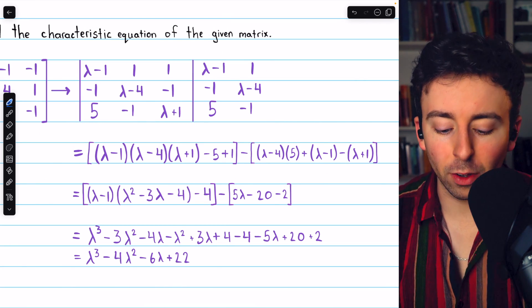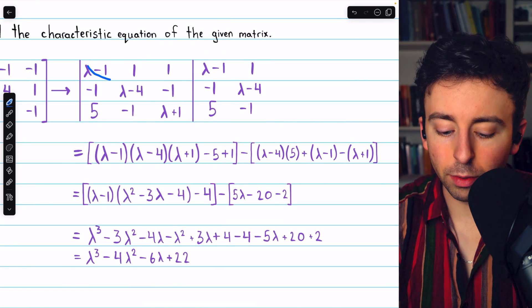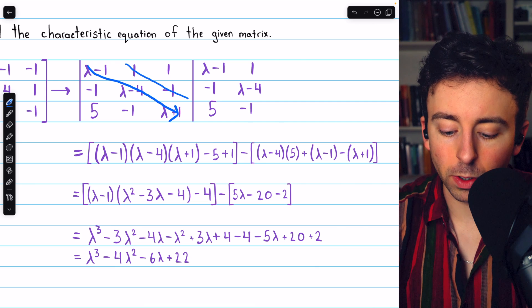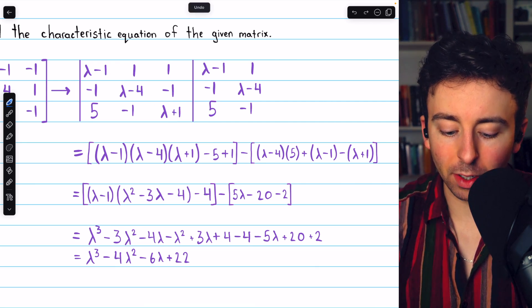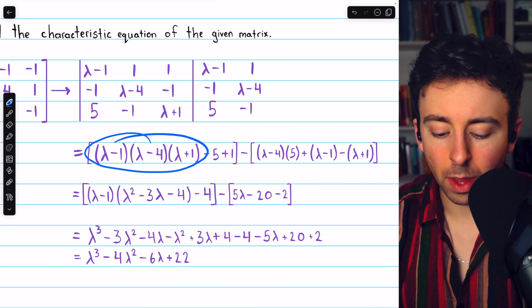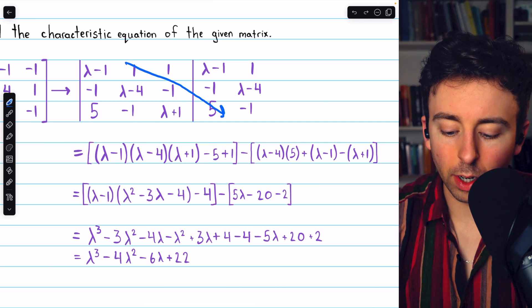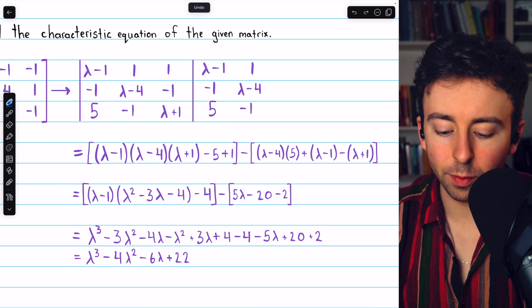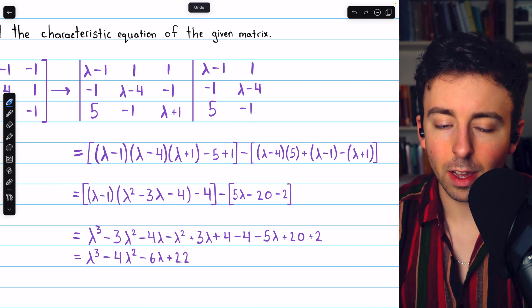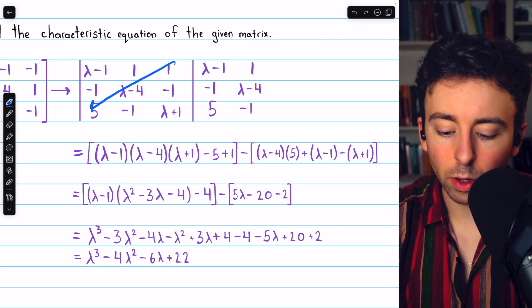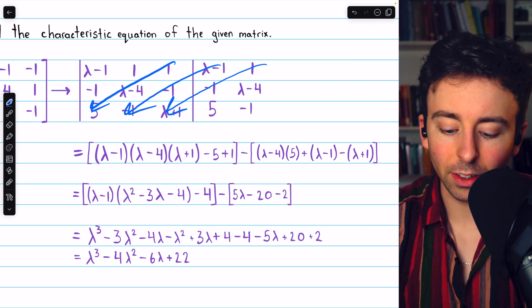From here, it's just a whole bunch of algebra. The first thing we do is multiply along these rightward diagonals and add those products together. So we can see all the lambda terms multiplied together here, and then 1 times negative 1 times 5 gives us that negative 5, and then 1 times negative 1 times negative 1 gives us the plus 1.